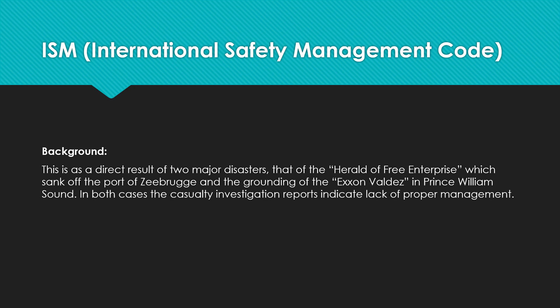ISM was introduced after the Herald of Free Enterprise incident, which sank off the port of Zeebrugge once it departed. The vessel capsized and sank, leading to the deaths of a number of people. The main reason was that the bow door was kept open. The responsibility for closing the bow doors lay with a crew member who was found sleeping in his cabin — a clear case of negligence in duty.